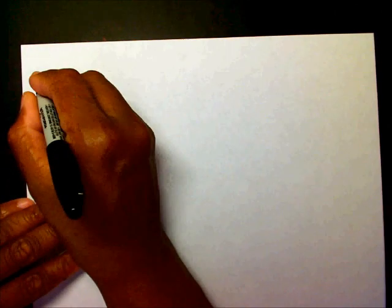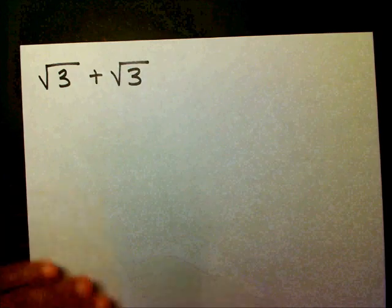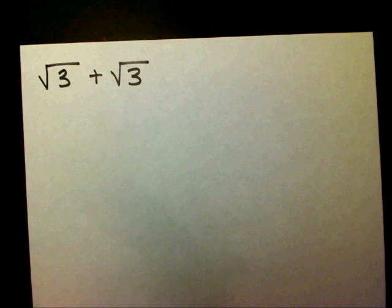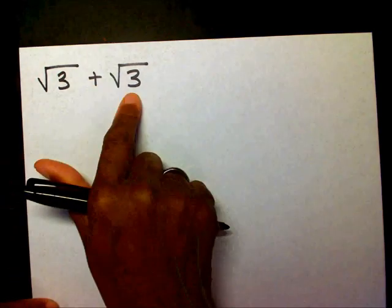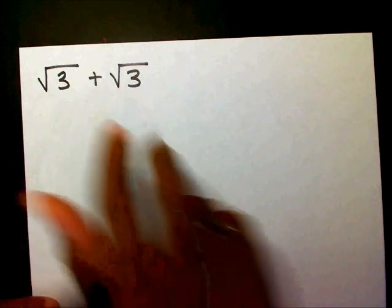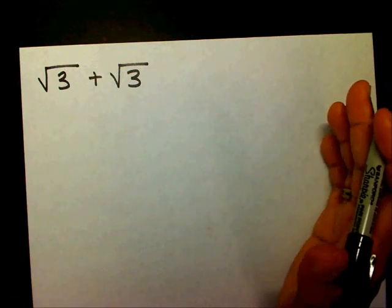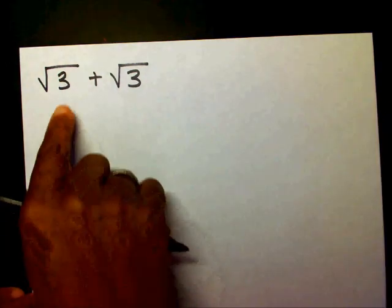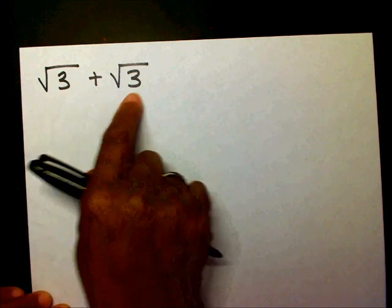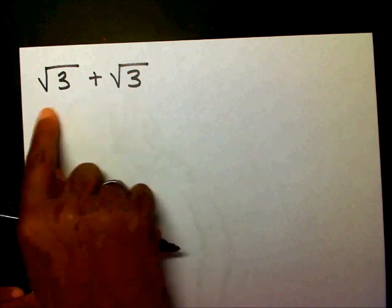Sometimes you have to do some work before you actually add the radicals — you have to put them in simplest form. Our first problem is going to be radical 3 plus radical 3. First thing you want to do is make sure that your radicals are in simplest form. Radical 3 and radical 3 are already in simplest form. Now you look at your radicands, and if they're the same, you can add them. This radicand is 3 and this radicand is 3, so since these radicands are the same, I can add these radicals.